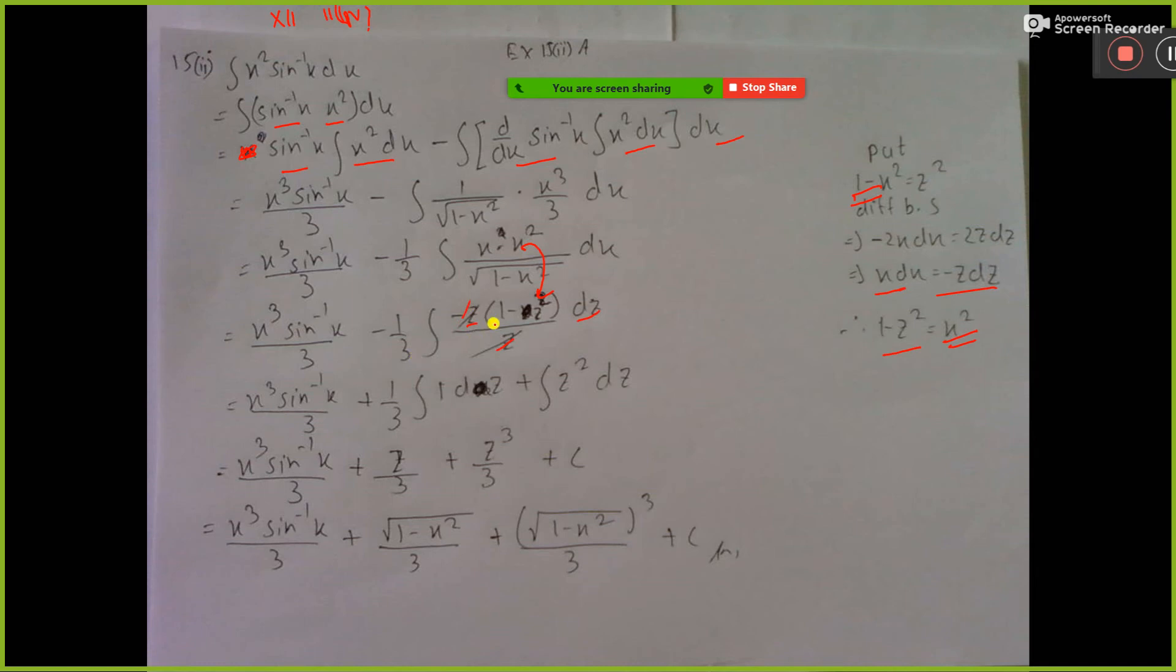This cancel, so here it is coming 1 dz, here z square dz, so dz integration is z, 1 by 3 was there, and it will be z cube by 3.